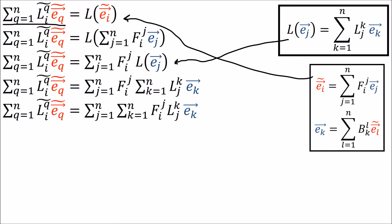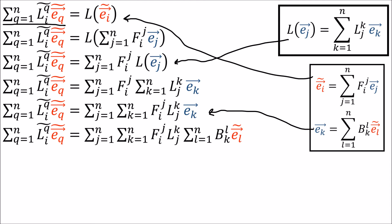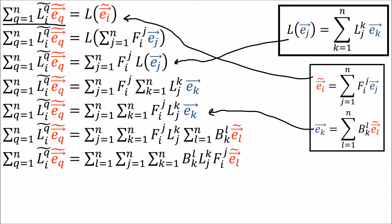Now we rearrange the sums, then rewrite the old basis vectors in terms of the new basis vectors using the backward transform, and rearrange the sums one more time. On the left we have a linear combination of E-tilde basis vectors using summation index Q, and on the right we have a linear combination of the E-tilde basis vectors with summation index L.